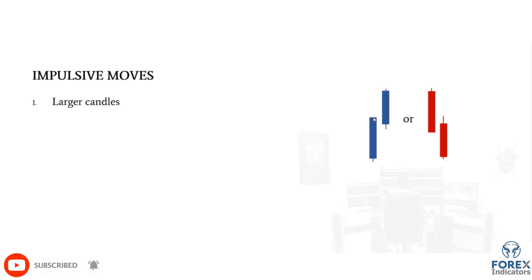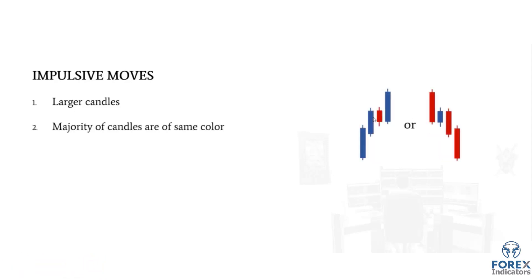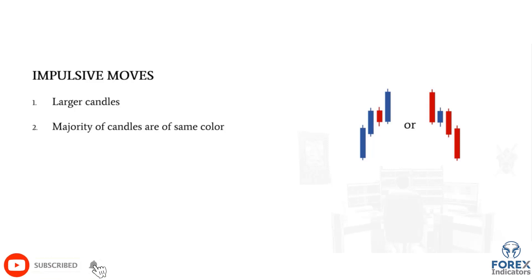The second characteristic of an impulsive move is that the majority of candles are the same color — either generally bullish or generally bearish. This integrates a sense of time beyond one candle. For example, if most candles over a long period are bullish — bullish, bearish, bullish — that presence of buying pressure over several candles indicates strong order flow, which we use to identify impulsive moves.